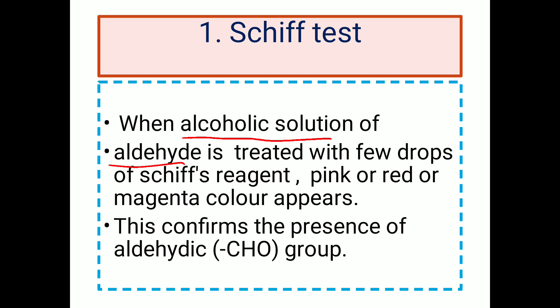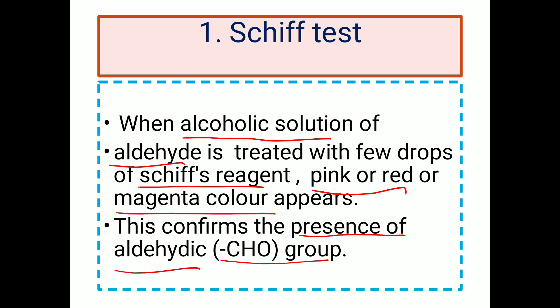In the Schiff's test, the unknown compound in a test tube is treated with an alcoholic solution and a few drops of Schiff's reagent. If a pink, red, or magenta color is obtained, this confirms the presence of an aldehyde CHO group. If the color is not produced, the aldehyde group is absent.